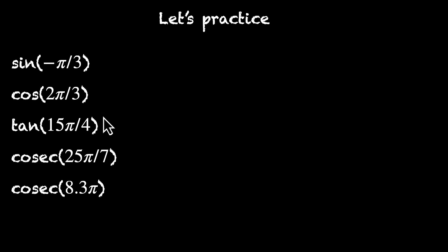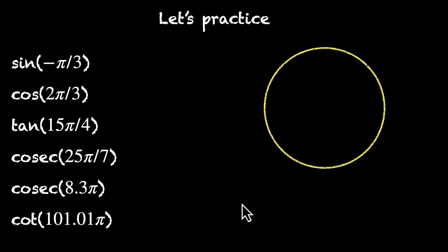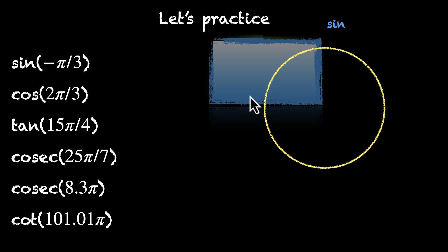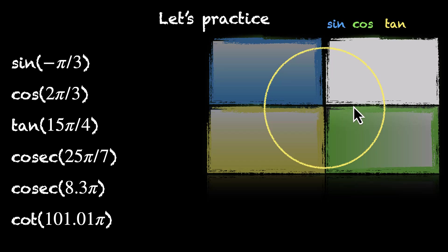Now let's practice. Figure out the signs of these six ratios: sine, cos, tan, cos, cos, and cot. Pause the video and try this on your own. Alright, let's do this together. We have our unit circle. The second quadrant is where sine is positive, the fourth is where cos is positive, the third is where tan is positive, and the first is where all of them are positive. To get the signs, we need to figure out where these points are on the unit circle. Let's figure out their quadrants first.